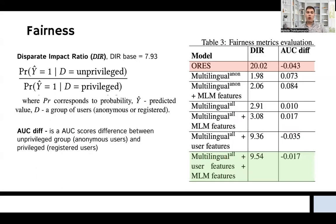We also evaluate the fairness of the model. To do that, we use the disparate impact ratio. First, we calculate the base rate. In our case, that is 7.93.